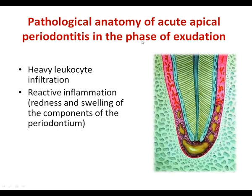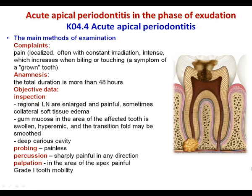The second form is acute apical periodontitis in the phase of exudation. Pathological anatomy shows heavy leukocytic infiltration in the periapical tissue and reactive inflammation with redness and swelling of the periodontium components. The main complaint is pain — localized, often with constant irradiation, very intense, and increasing when biting or even touching the tooth. This is called the symptom of the 'grown tooth.' Anamnesis reveals total duration of more than 48 hours.